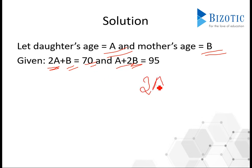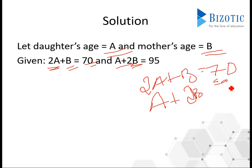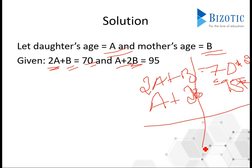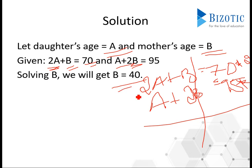To solve: multiply the first equation by 2 to get 4a + 2b = 140, then subtract the second equation (a + 2b = 95) to eliminate b. This gives 3a = 45, so a = 15. Substituting back: b = 70 - 30 = 40. So the mother's age is 40, which is the correct answer option.